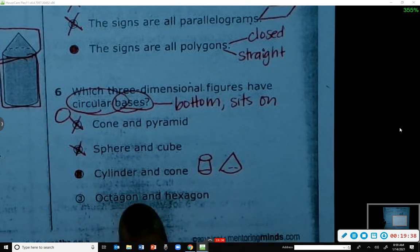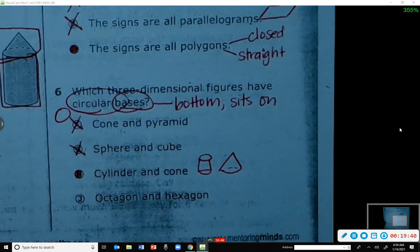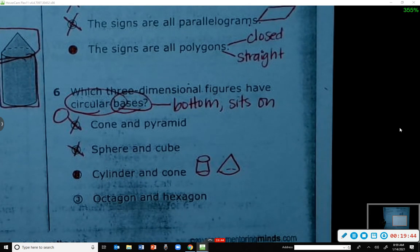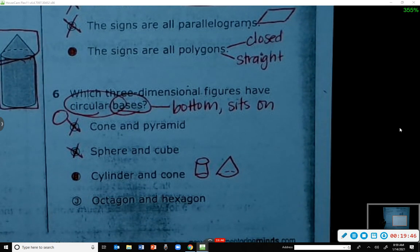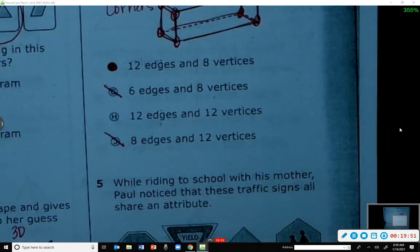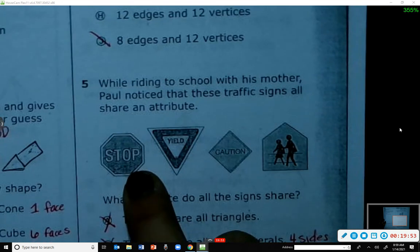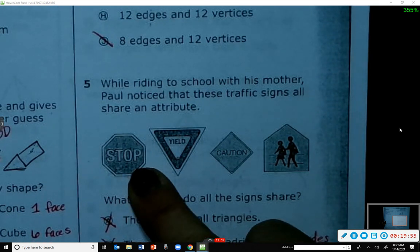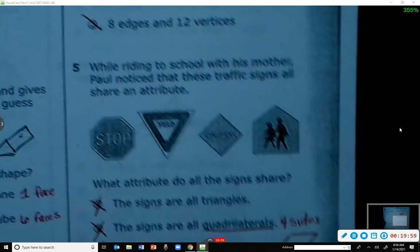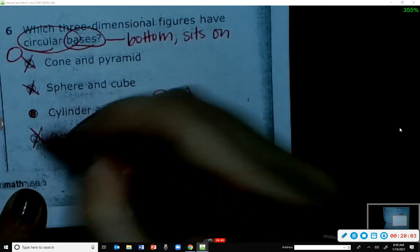What was wrong with J? Octagon and hexagon. Are those 3D shapes? Is the octagon a 3D shape? So you're telling me that this is a 3D shape right here at the stop sign? No. Is a hexagon a 3D shape? No. So these are not even 3D shapes.